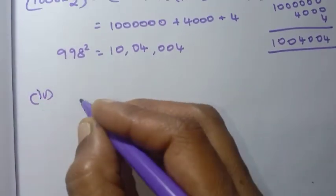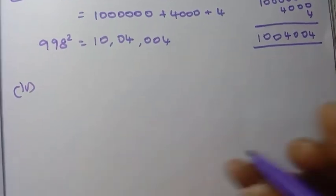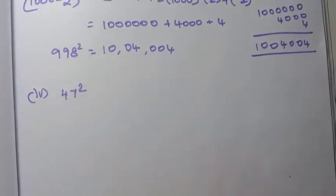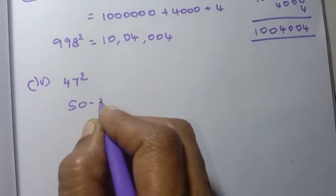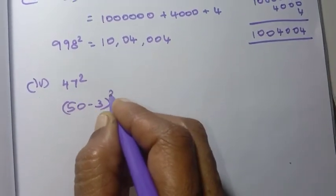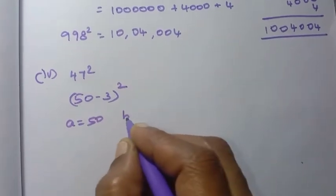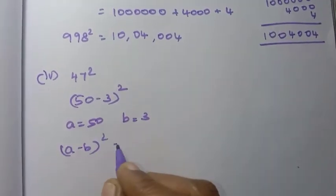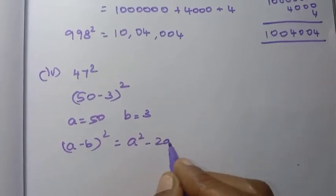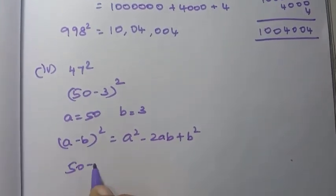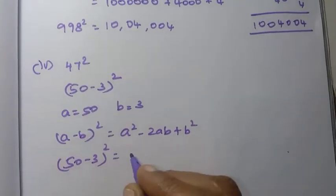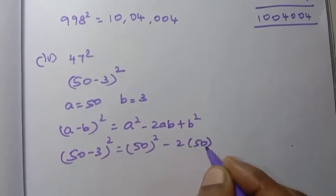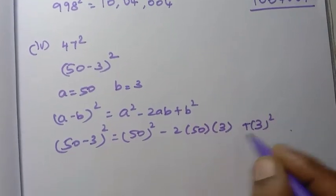Now the fourth sum: 47 square. We write 47 as 50 minus 3. So it is 50 minus 3, the whole square. Here A has value 50 and B has value 3. Using A minus B whole square equals A square minus 2AB plus B square.